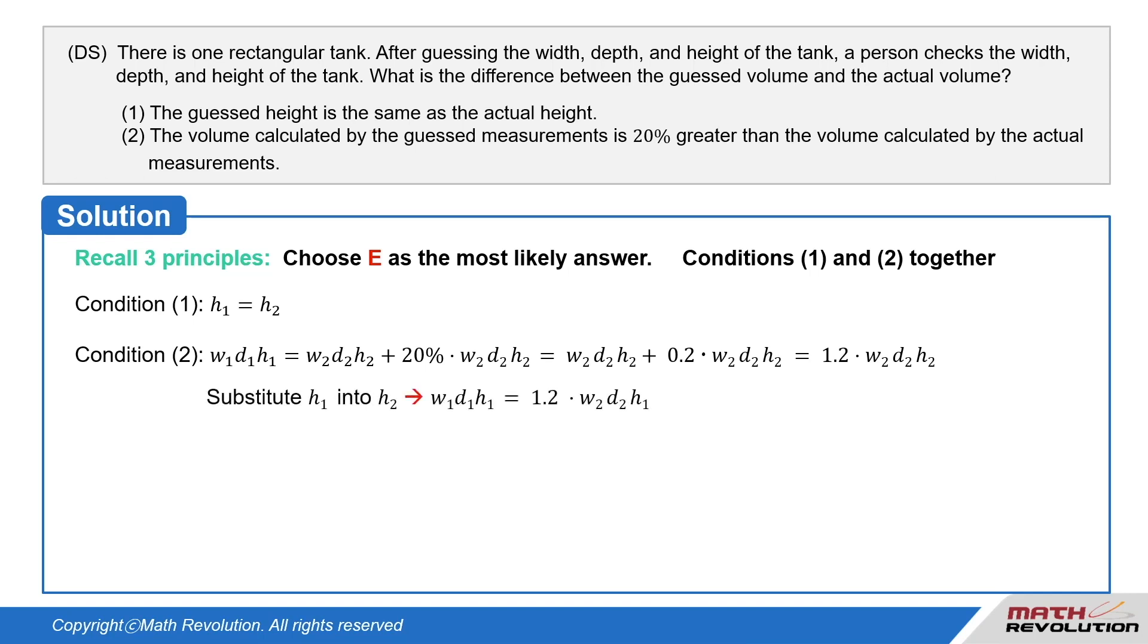Substituting H1 into H2 gives us W1·D1·H1 which equals 1.2 times W2·D2·H1. The H1 on either side cancels out, and we get W1·D1 equals 1.2 times W2·D2.